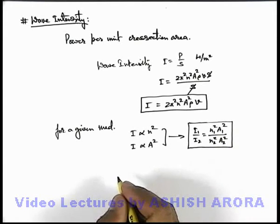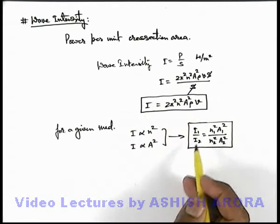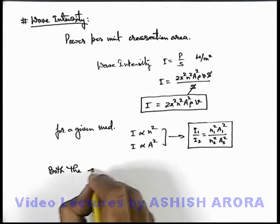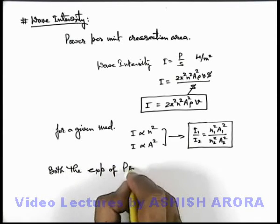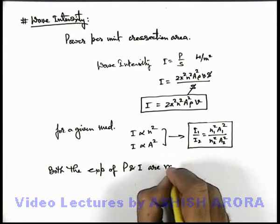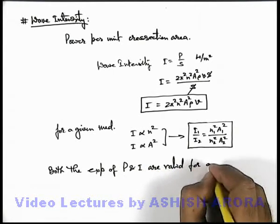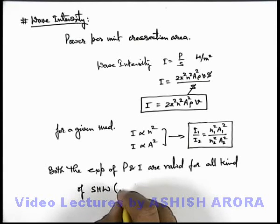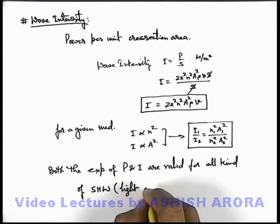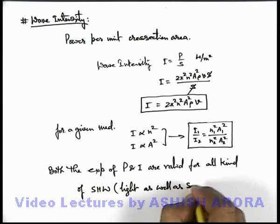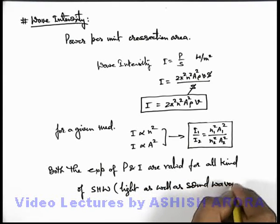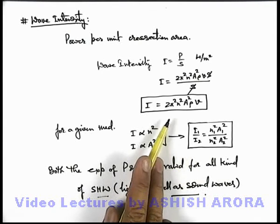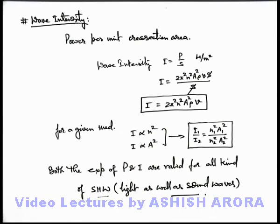So here we can also write that the expressions for power and intensity we have used are valid for all kinds of simple harmonic waves — these include light as well as sound waves. For all simple harmonic waves, this is how we get the intensity as well as the power of a wave, as we have taken up in the previous discussion.